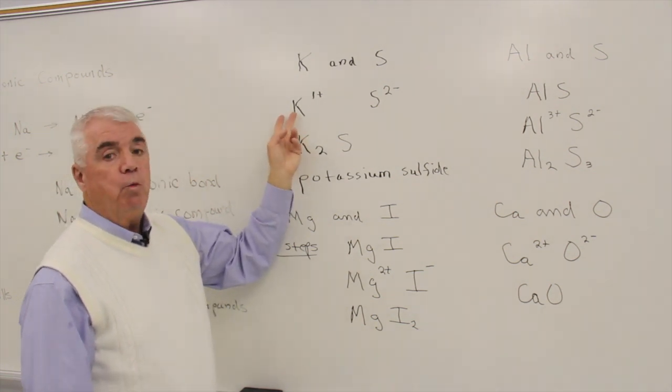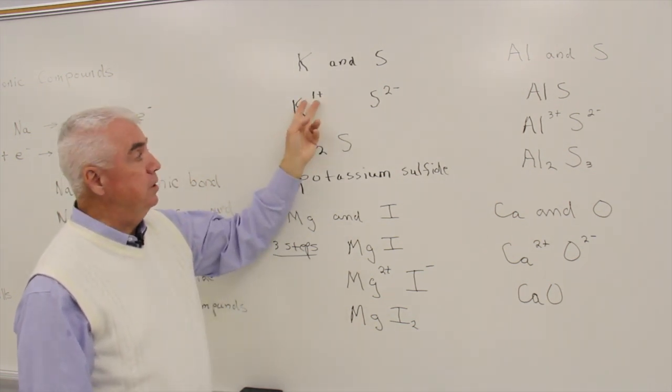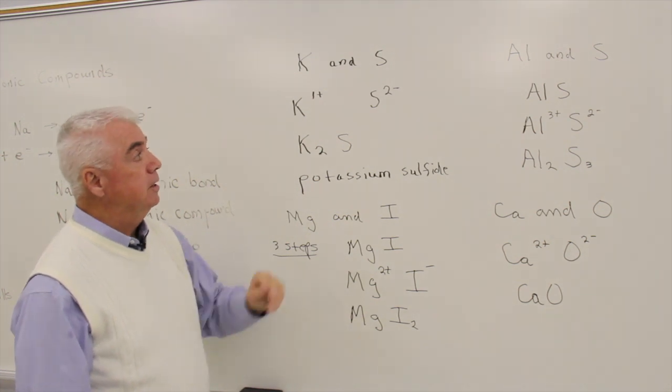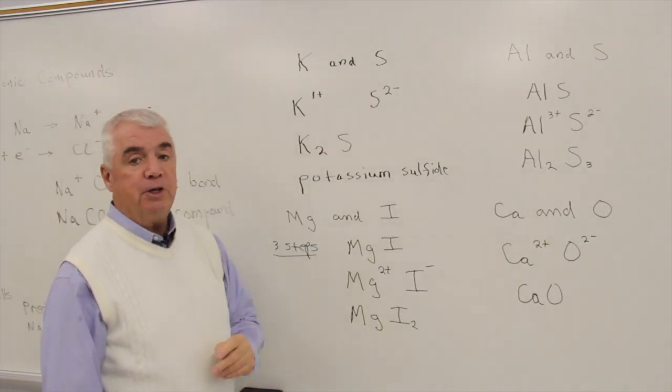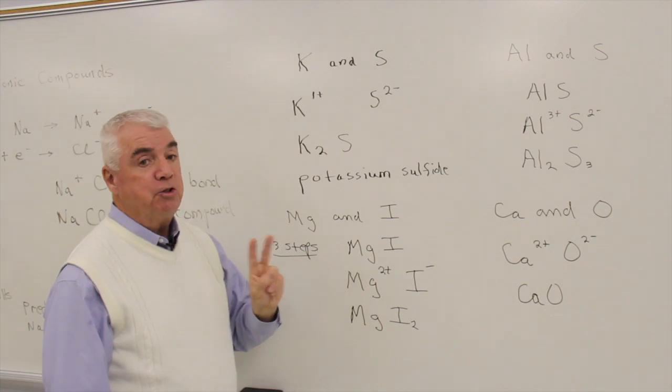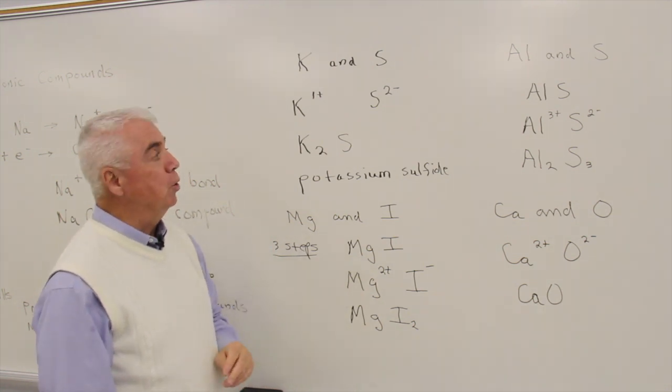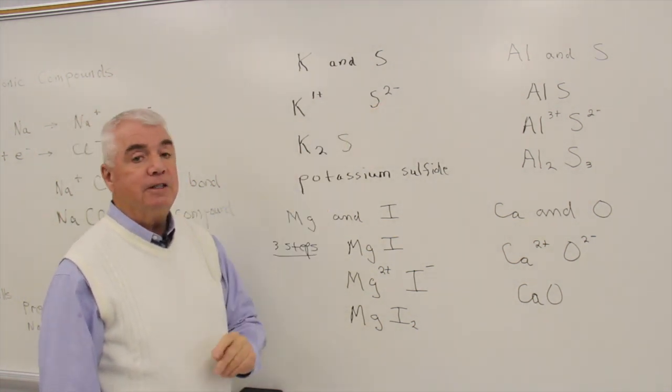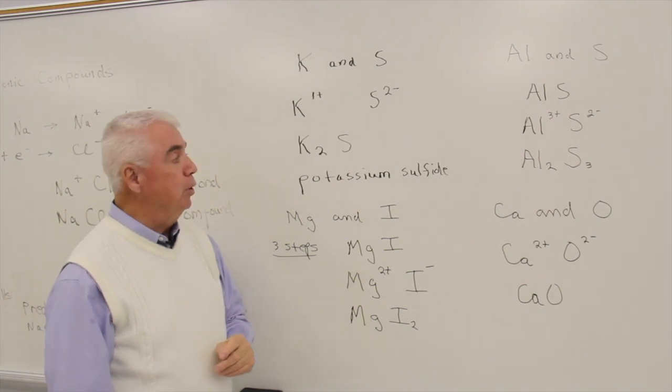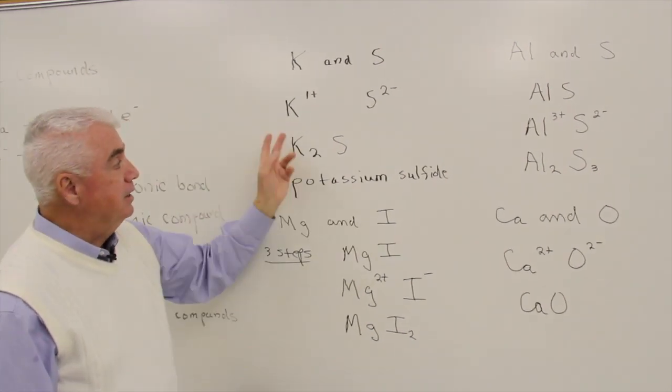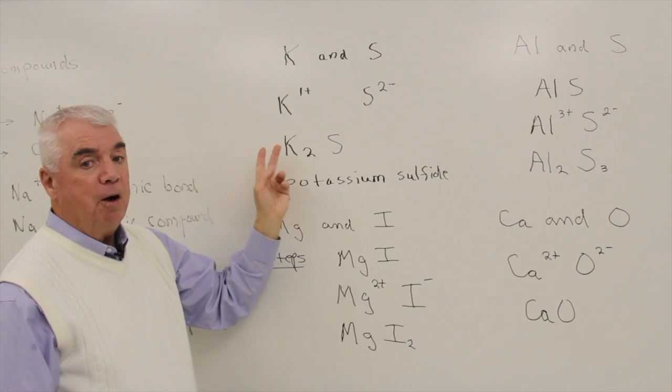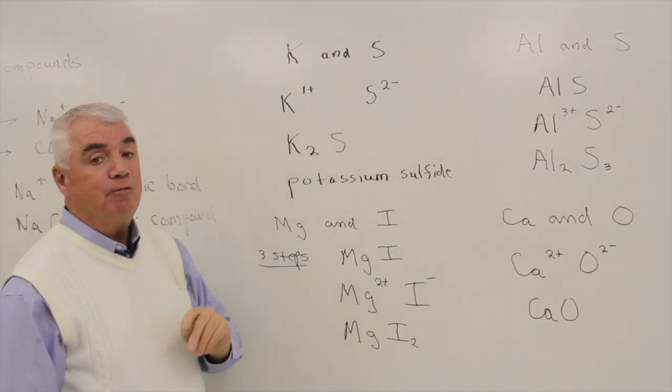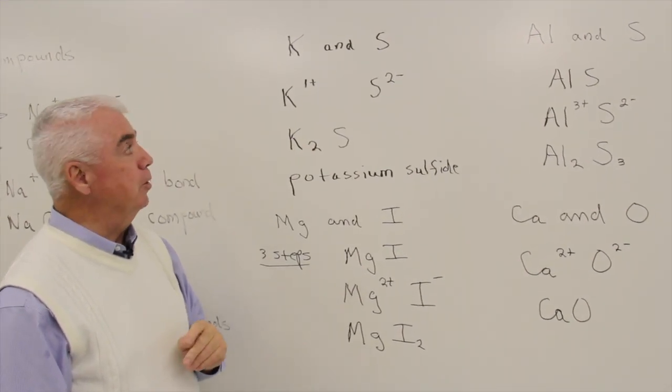Potassium is in group 1A, so it forms a 1 plus ion. Sulfur is in group 6A. Well, it needs two more electrons to have a noble gas configuration, so sulfur tends to take on two electrons. But when we form the ionic compound, we've got to balance the number of electrons that are transferred.